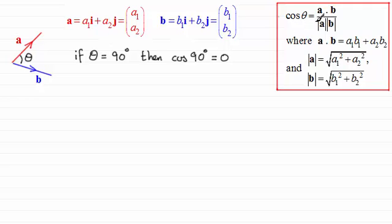And if that's the case then this fraction would equal 0. In other words the numerator a dot b would equal 0. So we've therefore got that the vectors a dotted with b would equal 0.